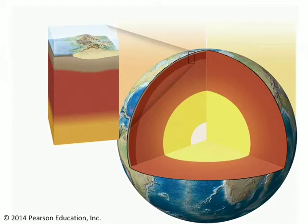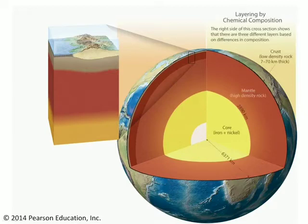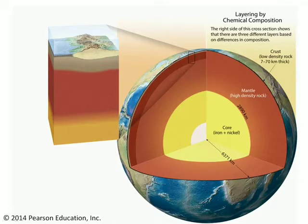Earth is a layered planet, but depending on what you want to focus on, you could say that it has three layers, or maybe five or seven, depending on what your priorities are. Let's first discuss the layering of Earth by its chemical composition — in other words, what kind of stuff is making up the different layers? If we do this, we basically have three main layers.